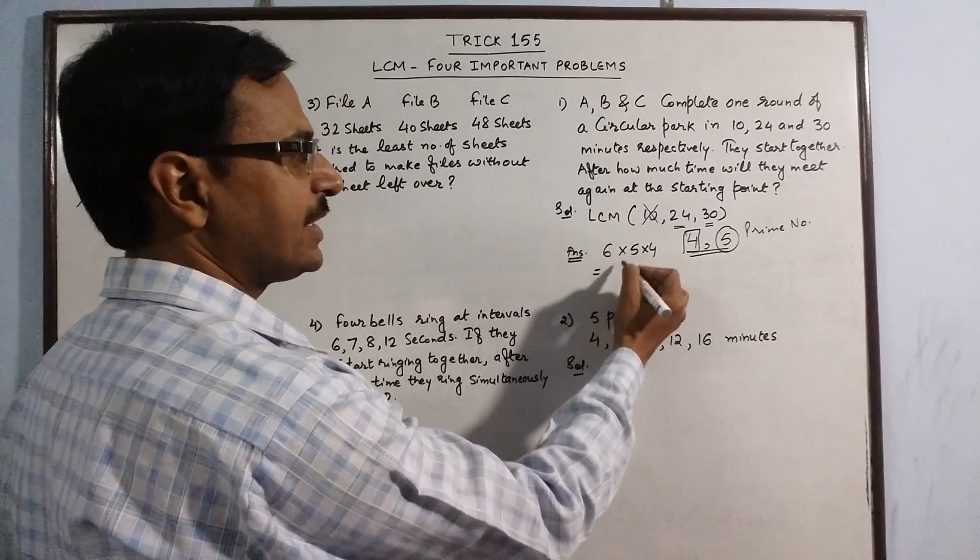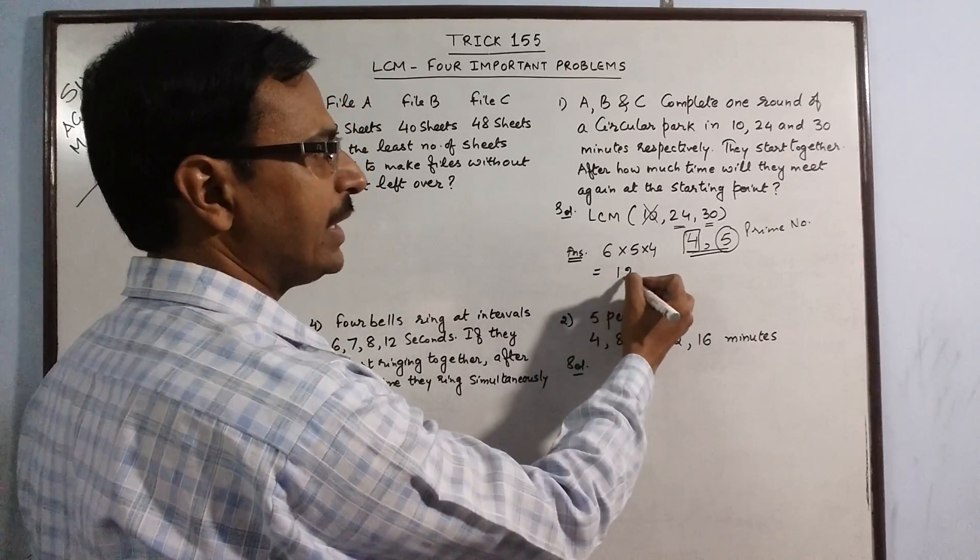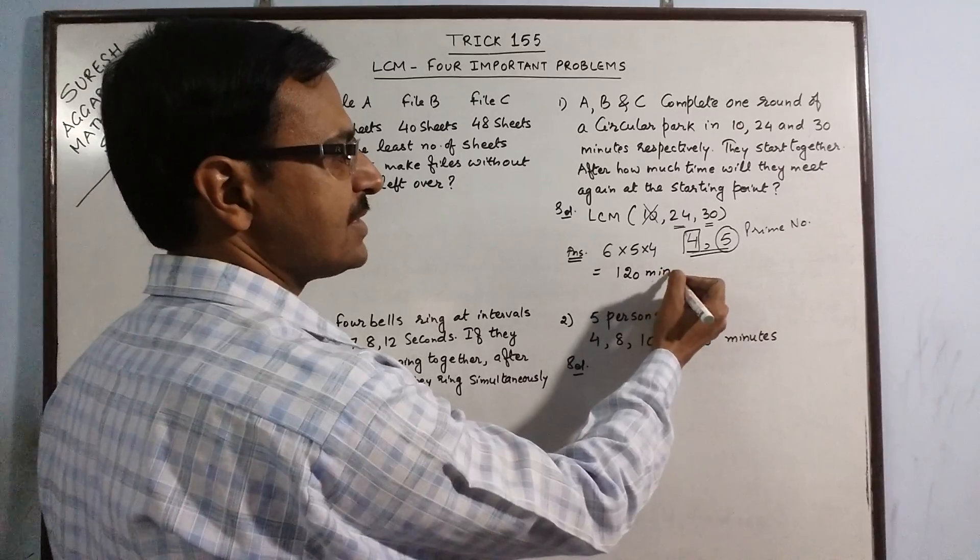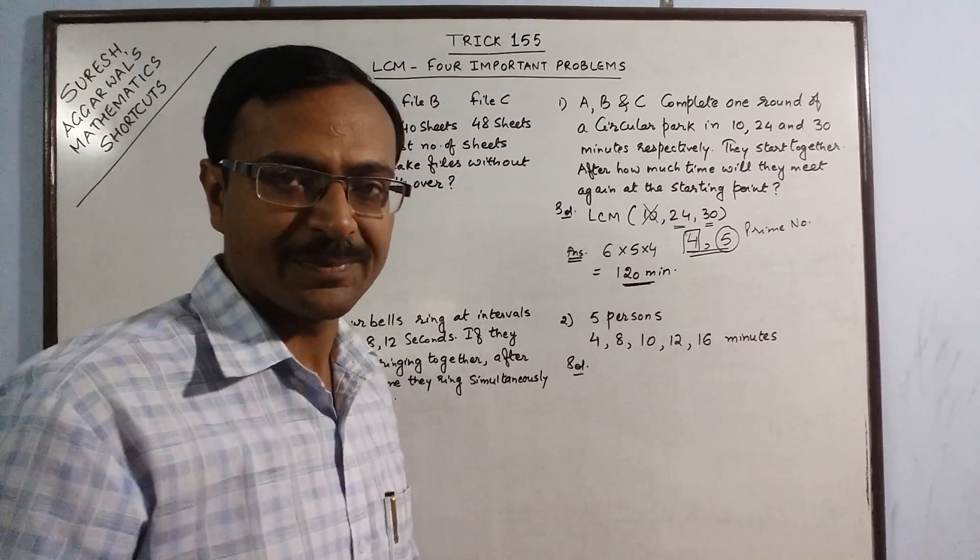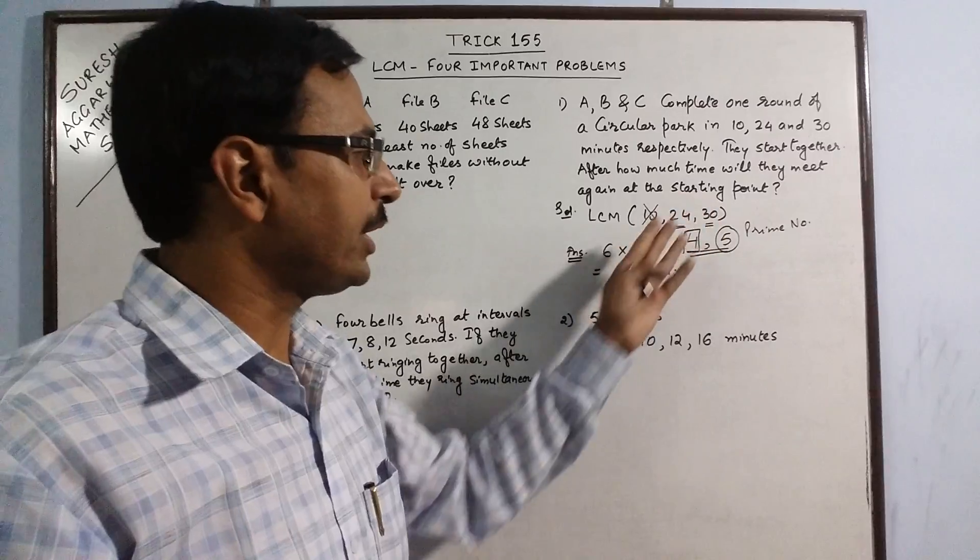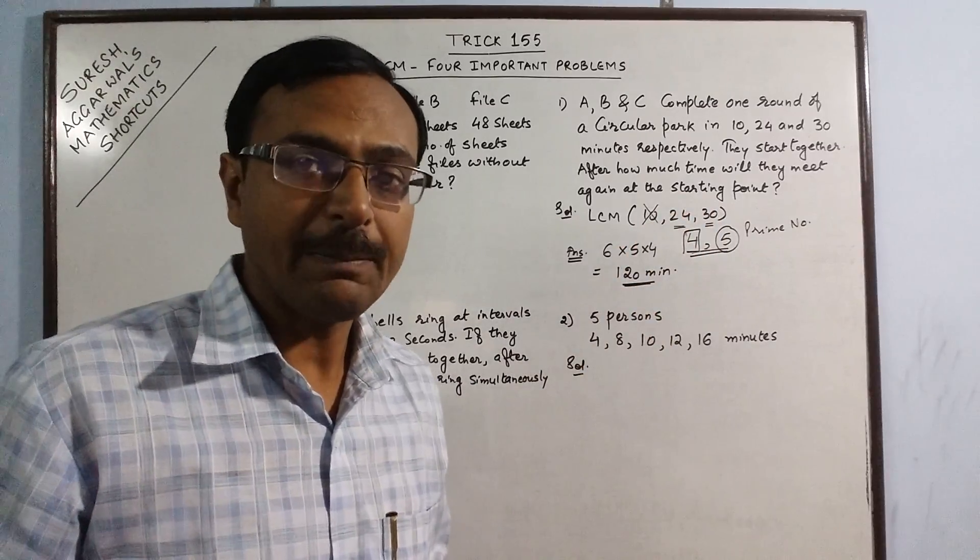So 6, 5's are 30 and into 4, so 120 minutes is our final answer. The three persons will meet again at the starting point after 120 minutes.